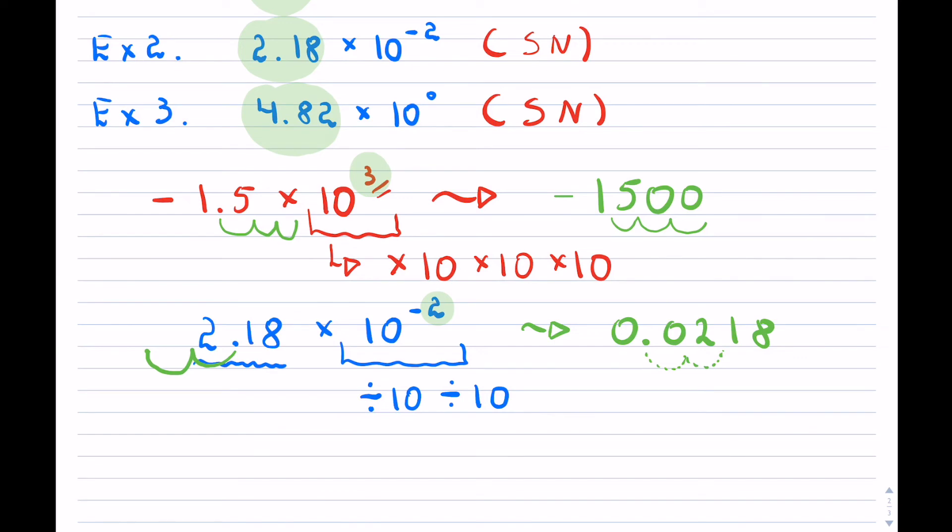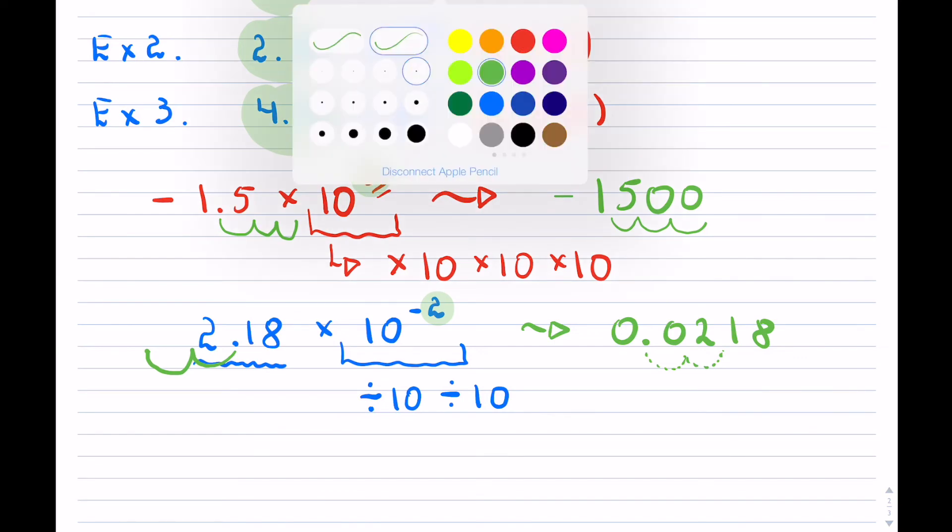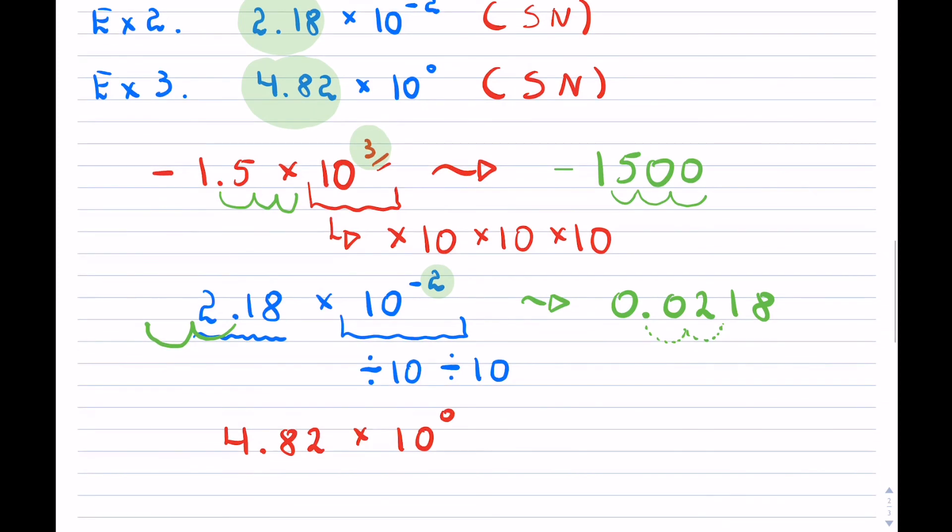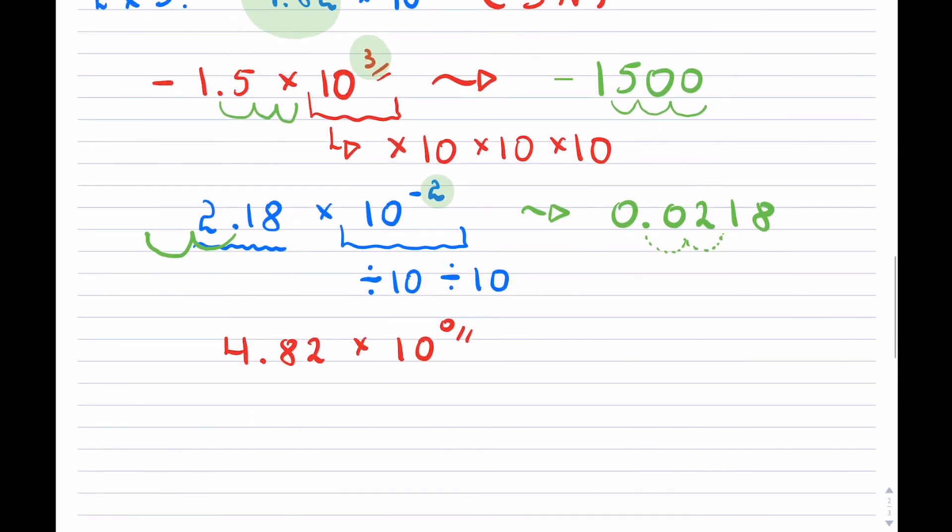Now the last one, so the last example that you see, this one sometimes it comes up. And when you have an exponent of 0, well, then you are not multiplying and not dividing by a power of 10.